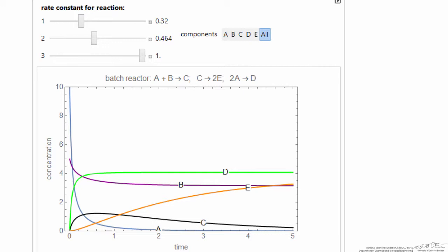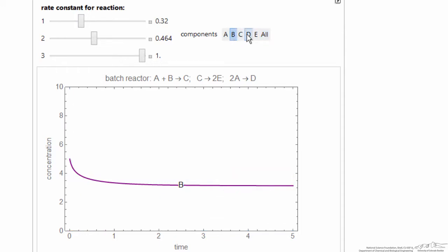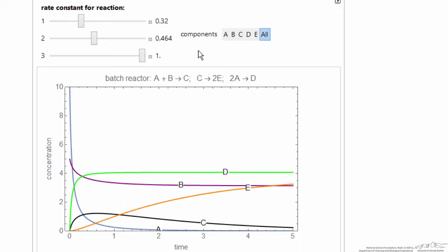So here's the interactive simulation, which we're plotting the concentration of all the species for these three reactions. We could just plot the concentration of B, or the concentration of D, and then what we can do is change the rate constant.